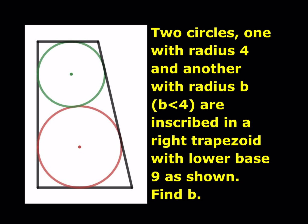We have two circles: one with radius 4 and another with radius b, where b is less than 4. They are inscribed in a right trapezoid with lower base 9, as shown. We're supposed to find b. The radius b is the radius of the green circle and the radius of the red circle is 4.